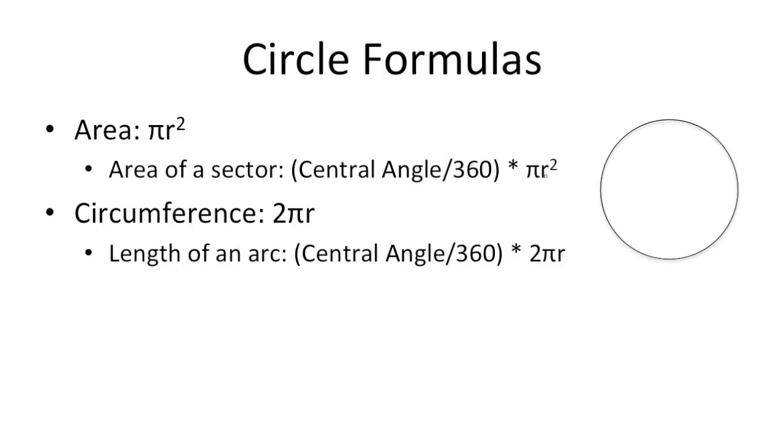To get the area of a sector, you just take the formula for the area of a circle and multiply it by what proportion of the circle you're looking for, which is the central angle divided by 360. So in this case, let's say we have a quarter of the circle here, represented by the 90 degree central angle here. The area of this sector is just 90 over 360, which is equal to 1 fourth times pi r squared. So a quarter of the area of the circle gets you the area of this sector.